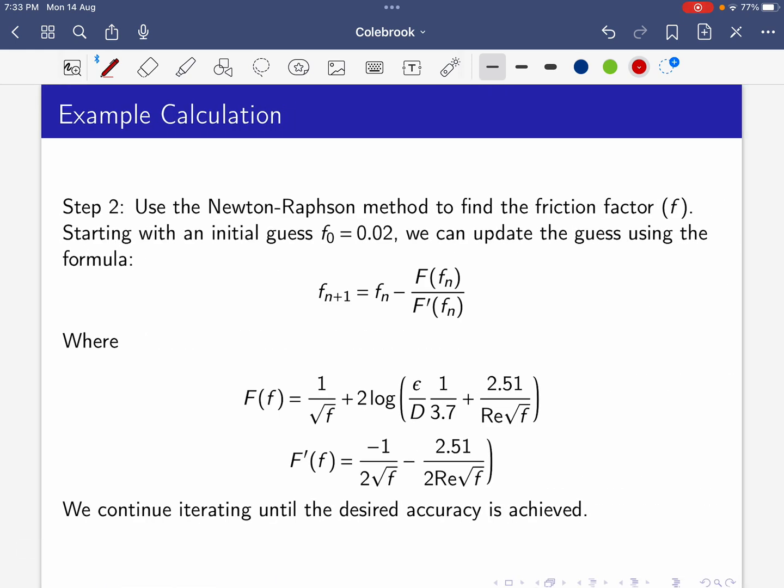The Colebrook equation is a non-linear equation, so we use Newton-Raphson method to calculate friction factor. The starting guess for the friction factor is f₀ = 0.02. We can update the guess using the formula: x_{n+1} = x_n - F(x_n)/F'(x_n), or f_{n+1} = f_n - F(f_n)/F'(f_n).